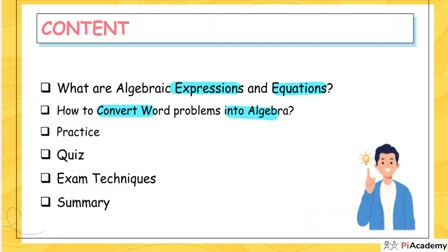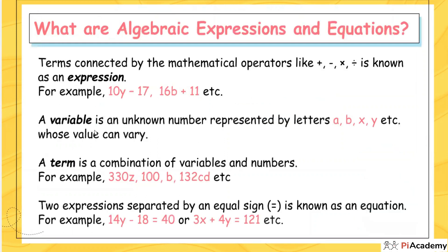Let's answer: what are algebraic expressions and equations? First, an expression is terms connected by mathematical operations like plus, minus, multiplication, and divide. Here you need to learn that terms connected by mathematical operators are known as an expression. Examples: 10y minus 17, or 16b plus 11. One important thing — what is meant by a term? You must know what a variable is before that.